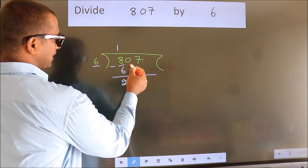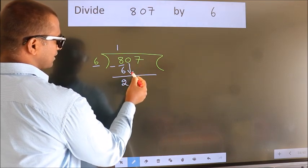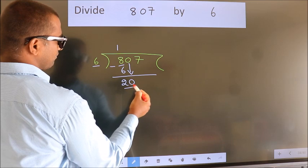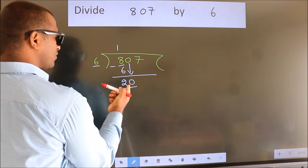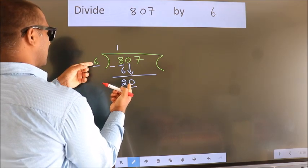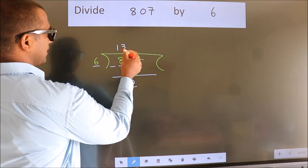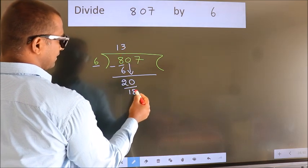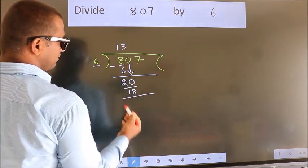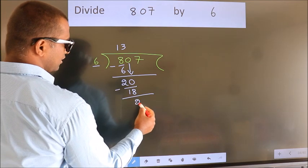After this, bring down the beside number. So 0 down. So 20. A number close to 20 in the 6 table is 6 threes: 18. Now we subtract. We get 2.